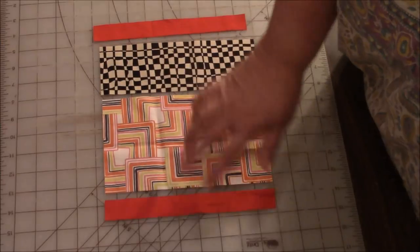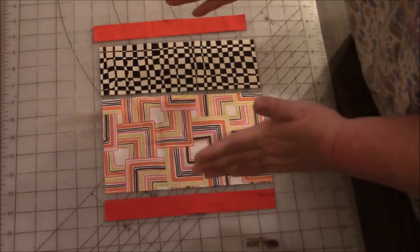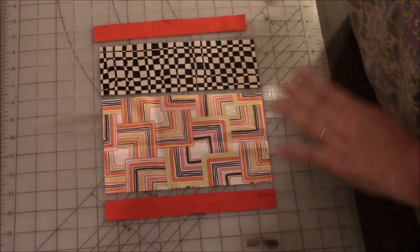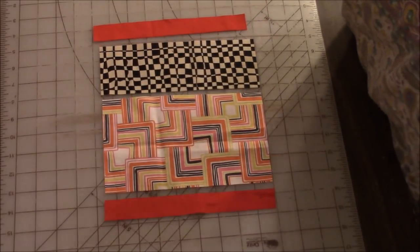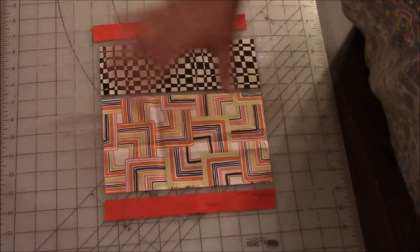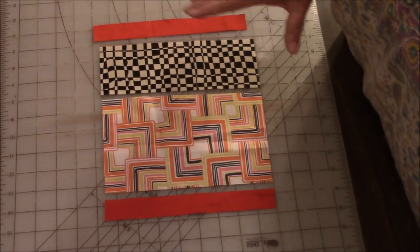When we sew these together the block should be eight and a half by eight and a half using a quarter inch seam allowance, approximately. Don't worry about that. You can always trim your block to make it square when you're done.